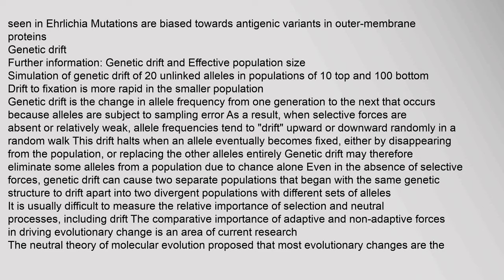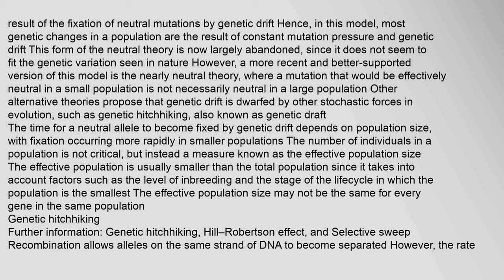It is usually difficult to measure the relative importance of selection and neutral processes including drift. The neutral theory of molecular evolution proposed that most evolutionary changes are the result of the fixation of neutral mutations by genetic drift. This form of the neutral theory is now largely abandoned, since it does not seem to fit the genetic variation seen in nature. However, a more recent and better supported version — the nearly neutral theory — proposes that a mutation that would be effectively neutral in a small population is not necessarily neutral in a large population. Other alternative theories propose that genetic drift is dwarfed by other stochastic forces in evolution, such as genetic hitchhiking, also known as genetic draft.